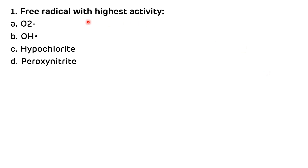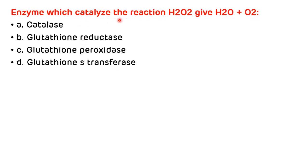Now, various multiple choice questions. First question: the free radical with the highest activity — options are superoxide anion, hydroxyl radical, hypochlorite, and peroxynitrate. As discussed, the highest activity is of the hydroxyl radical, so the correct answer is B. Second question: the enzyme that catalyzes conversion of hydrogen peroxide to H₂O plus O₂ — options are catalase, glutathione reductase, glutathione peroxidase, glutathione S-transferase. Catalase converts hydrogen peroxide, so the correct answer is A.